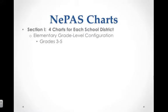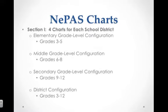NEPAS charts take information in grade level bands. For example, grades 3 through 5 fall into an elementary grade band. Grades 6 through 8 fall into a middle grade level configuration. Secondary grade level configuration would be grades 9 through 12. Then there is a district configuration, which combines all of the information from elementary, middle school, and secondary into a district configuration of grades 3 through 12.